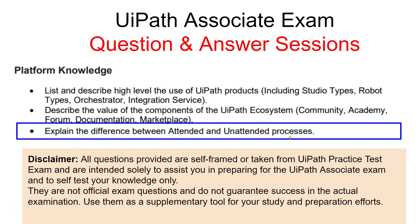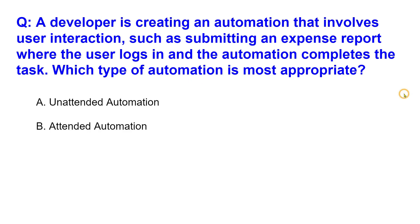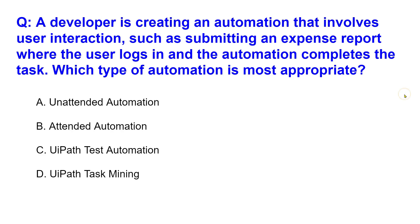The very first question: a developer is creating an automation that involves user interaction, such as submitting an expense report where the user logs in and the automation completes the task. Which type of automation is most appropriate? Your options are: unattended automation, attended automation, test automation, or task mining. Please comment your answer.